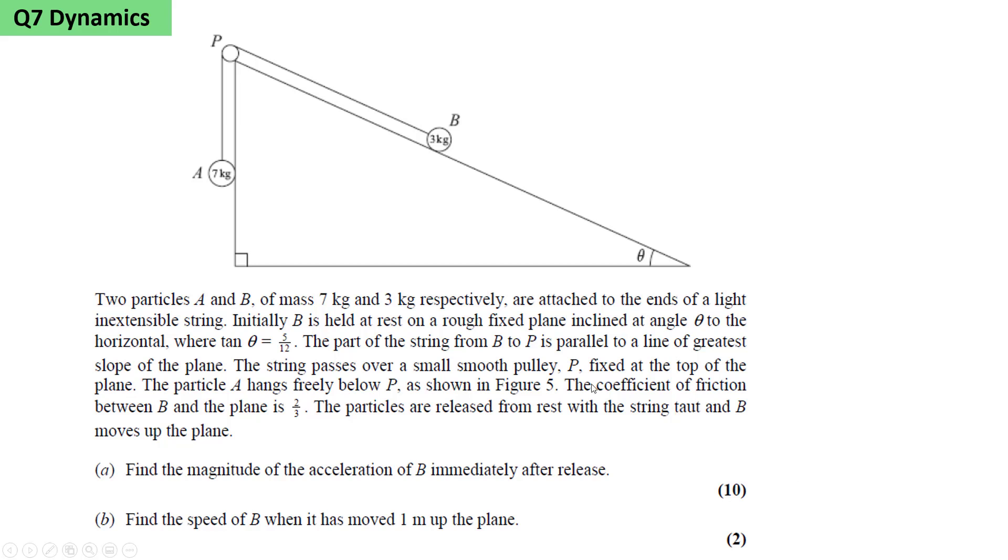Two particles A and B of mass 7 kilograms and 3 kilograms respectively are attached to the ends of a light inextensible string. We add forces for the weight 7g and 3g. Since it's inextensible, B will accelerate up the plane at the same rate as A accelerates vertically.